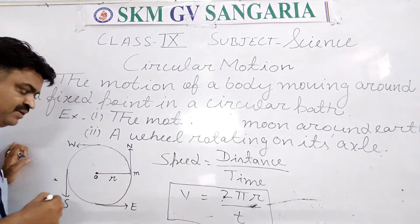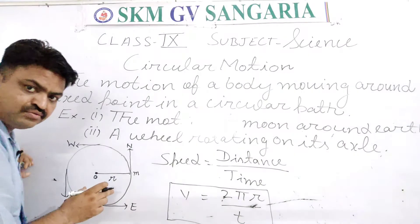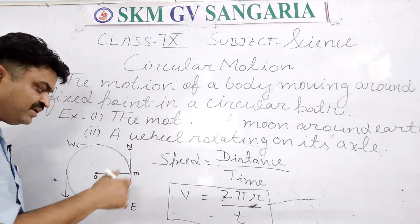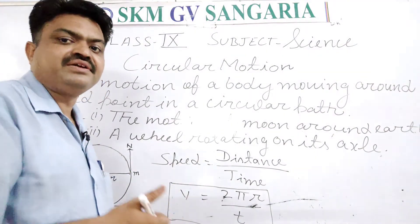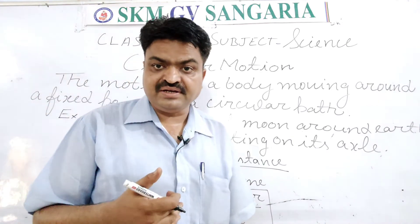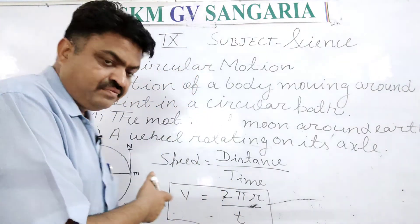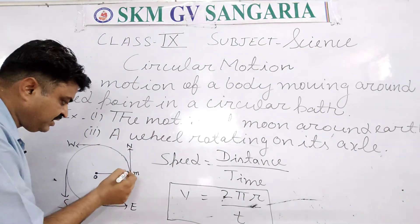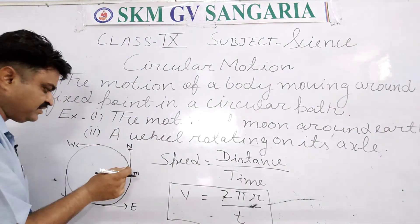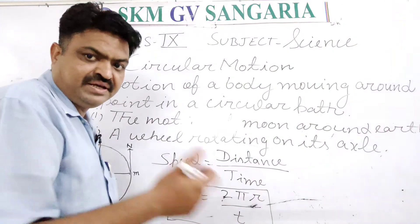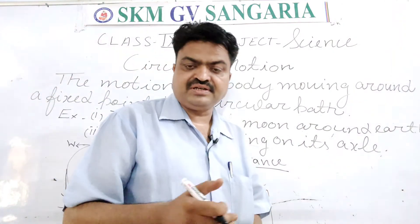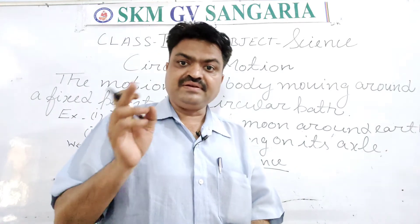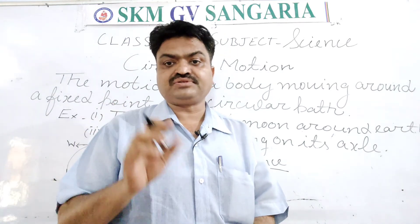The object has circular motion here. In this circular motion, what is found? It is acceleration. Because here, with the speed, acceleration is also taking place. And this motion is an example of acceleration, or oscillatory motion.